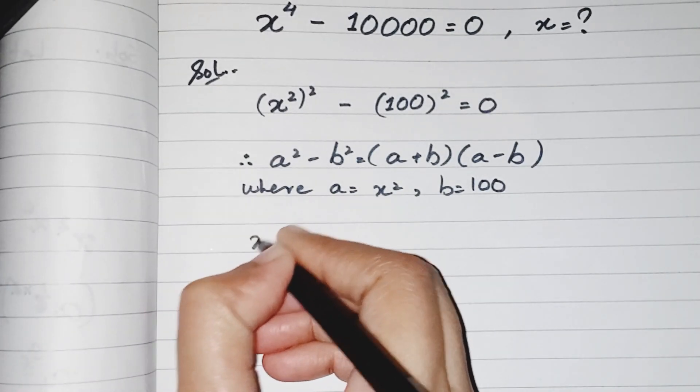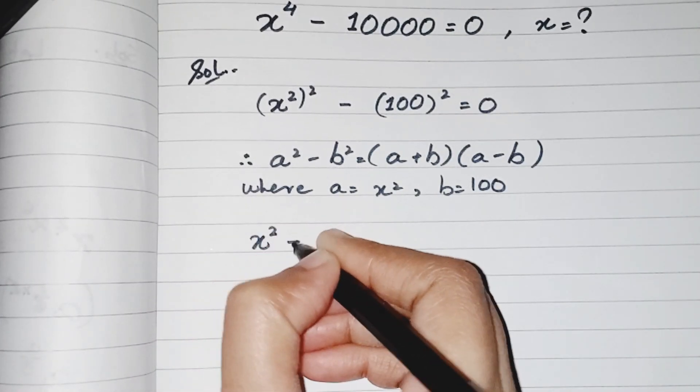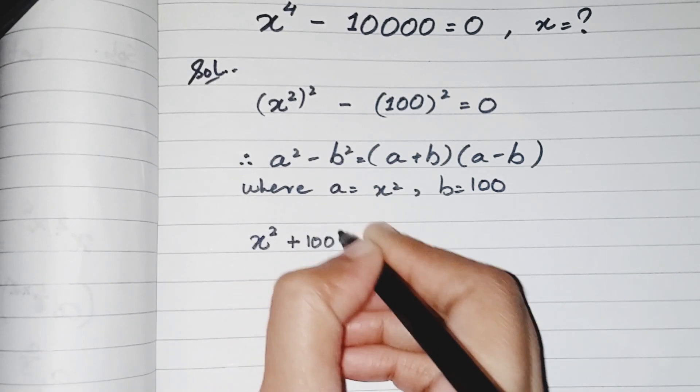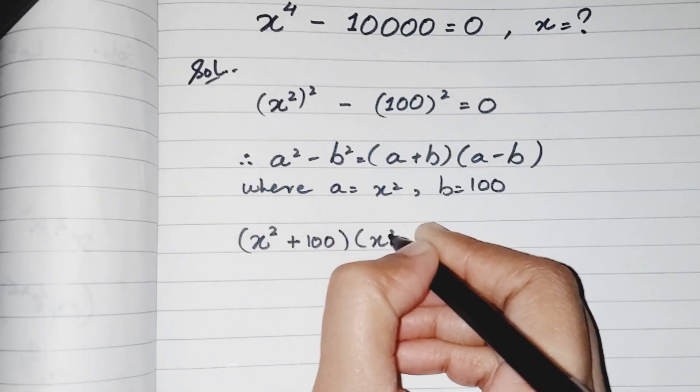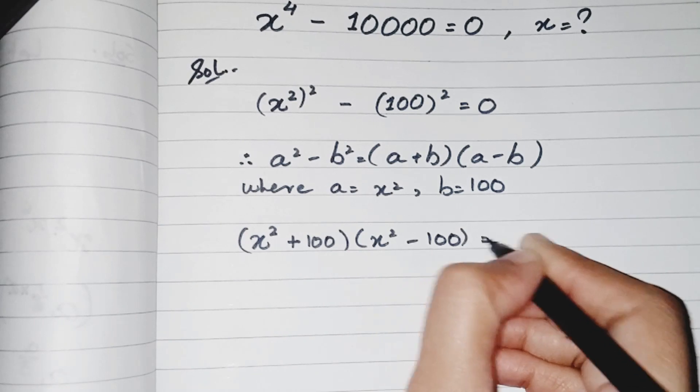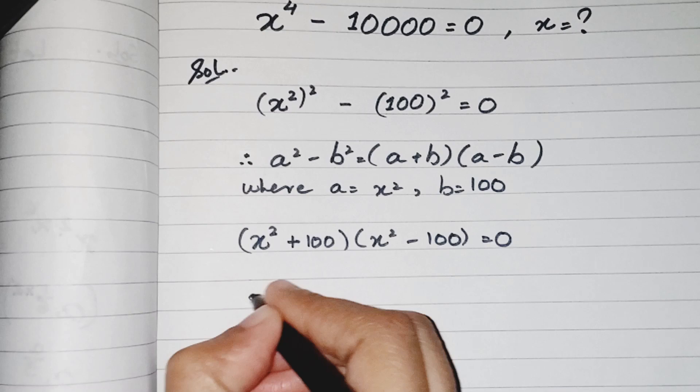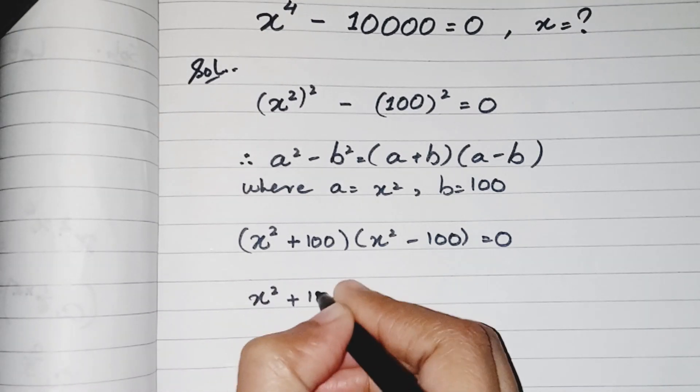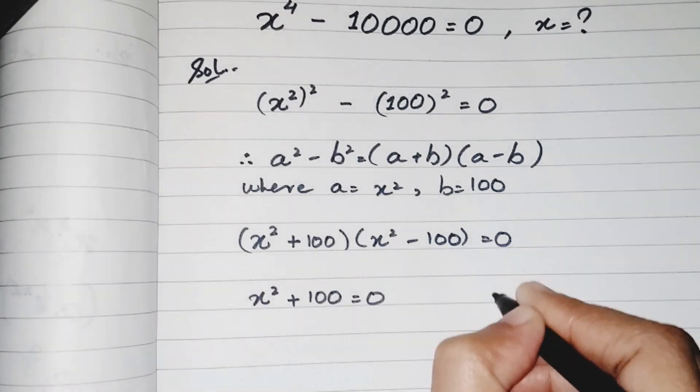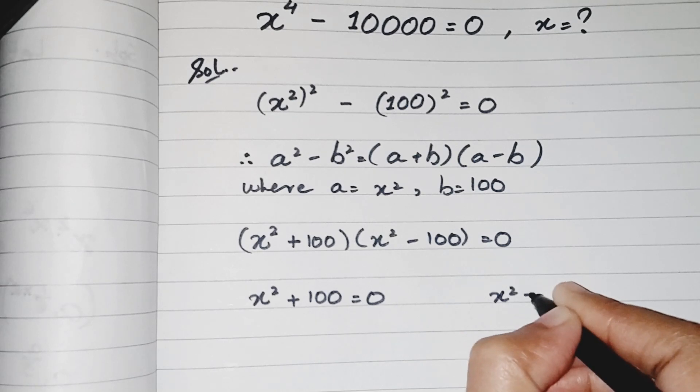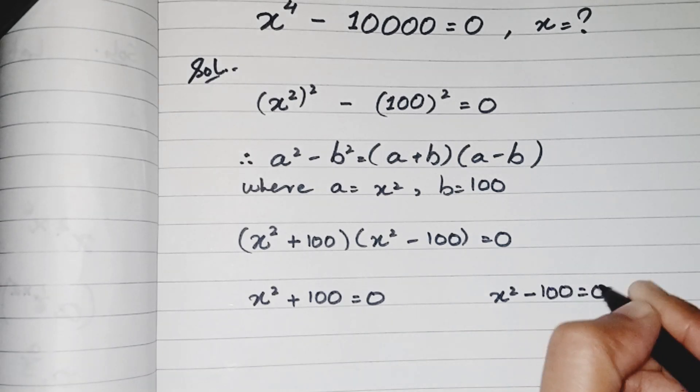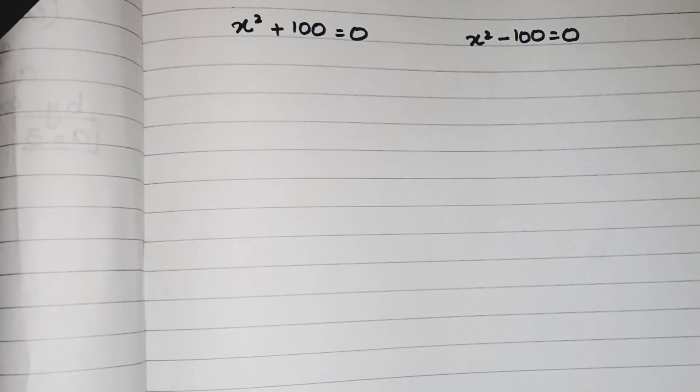In place of a I have to write x squared, so my question will be (x squared plus 100)(x squared minus 100) equals 0. So both will be equaled to 0: x squared plus 100 equals 0 and x squared minus 100 equals 0.